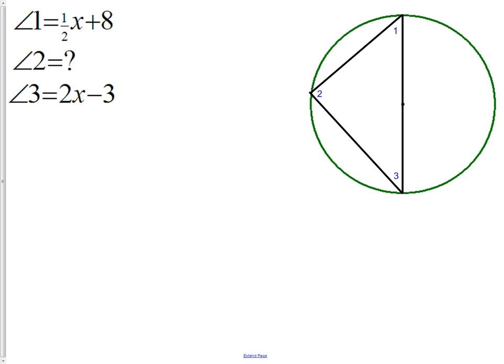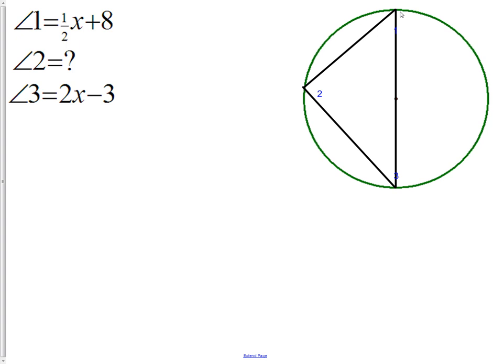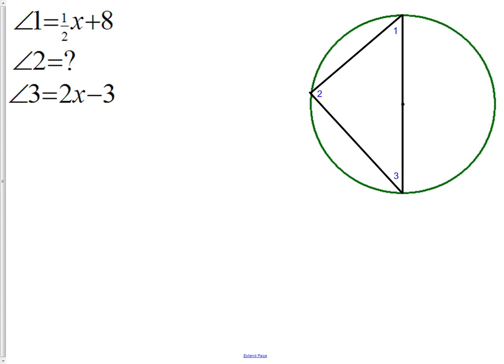Here is one more question. We know what angle 1 is. It is 1/2 x plus 8. We know angle 3 is 2x minus 3. We have no idea what angle 2 is. Our goal here in this question is to find the value of x. Hopefully you can see that the piece of the triangle that is created goes right across the middle of the triangle, which means we have a diameter. That means this part of the arc is 180 degrees. We have a semicircle.